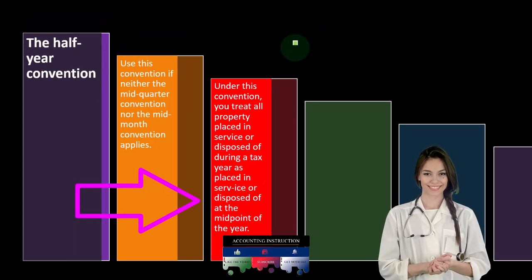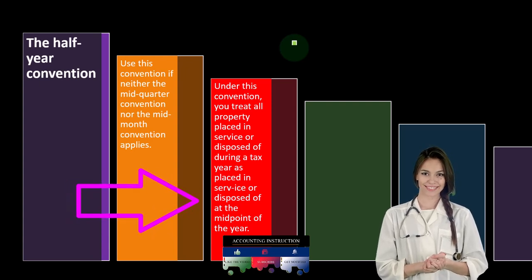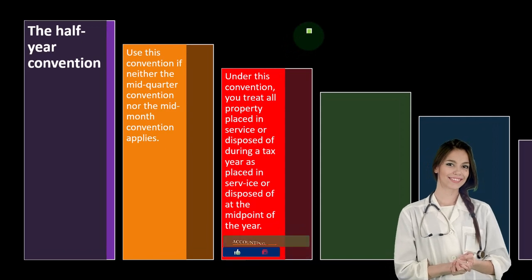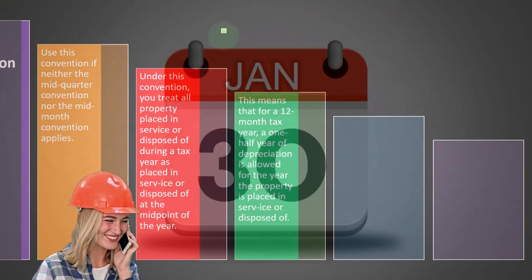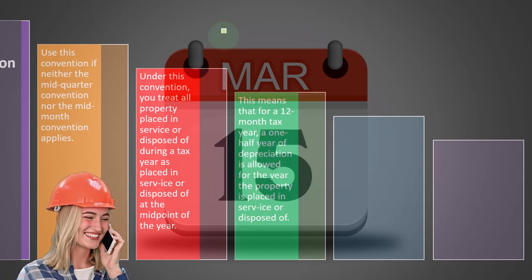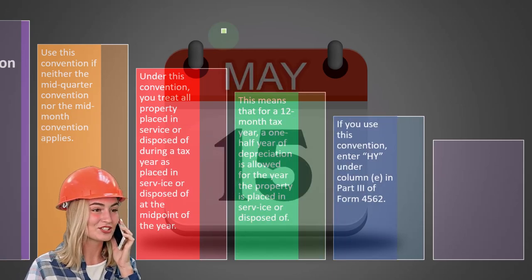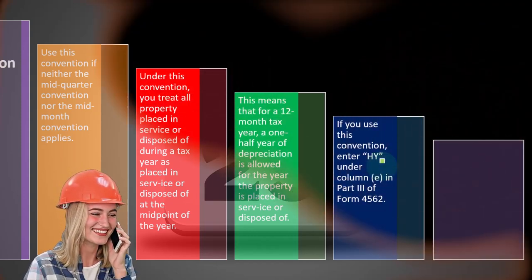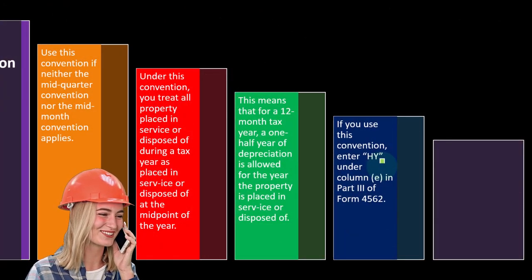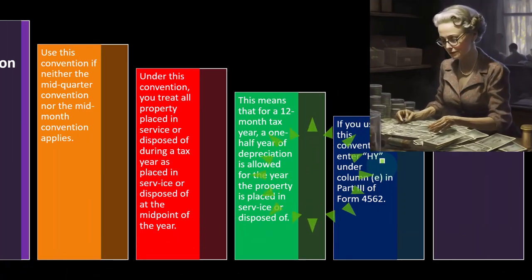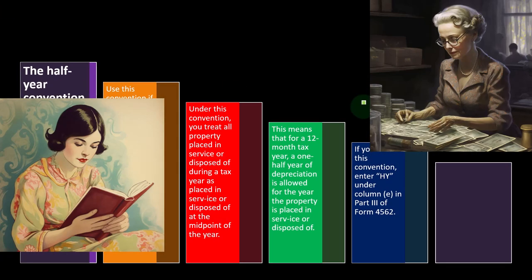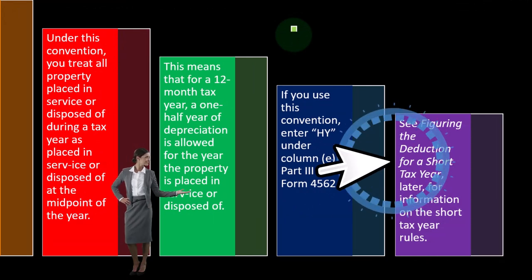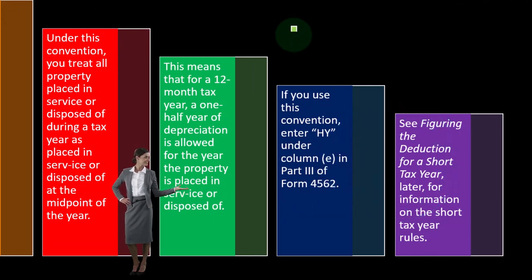Under the half-year convention, you treat all property placed in service or disposed of during a tax year as placed in service at the midpoint of the year, allowing one half year of depreciation. If you use this convention, enter 'HY' — so you'll see MACRS double declining balance with HY for half year, under column E in Part 3 of Form 4562. See the section on figuring the deduction for a short tax year for information on short tax year rules.